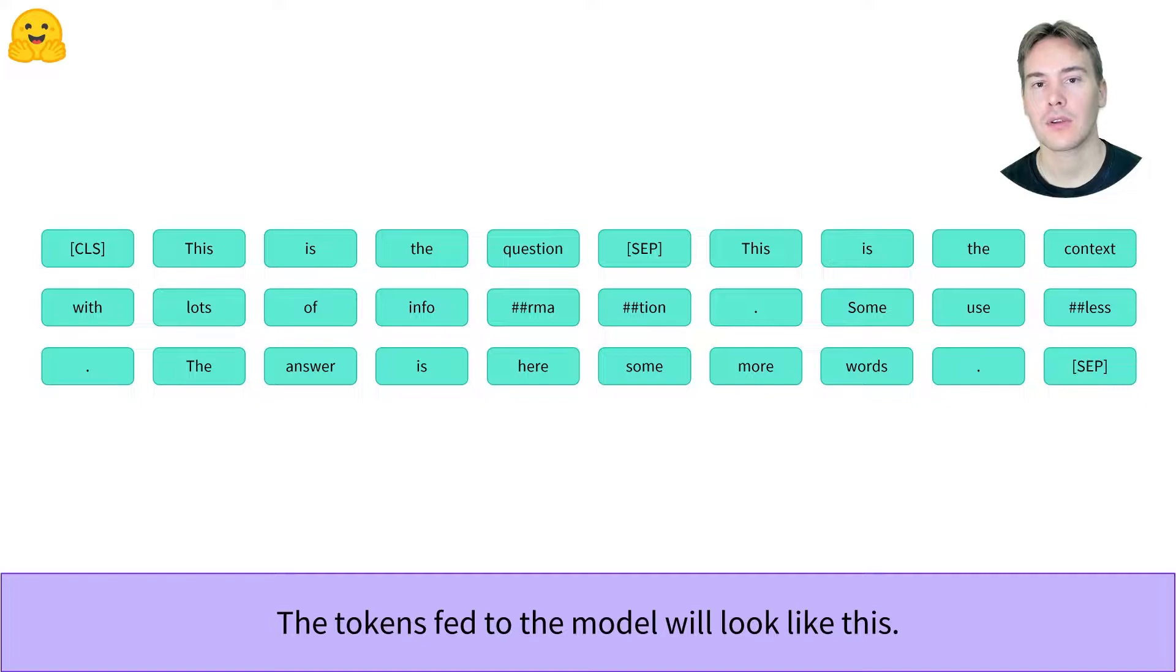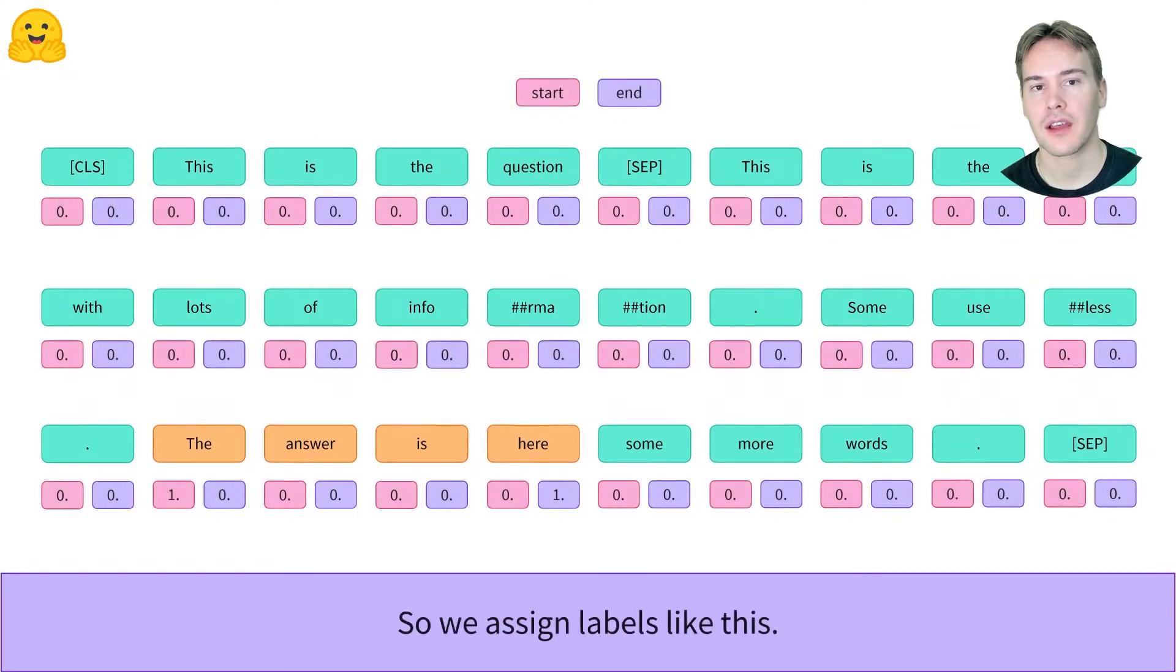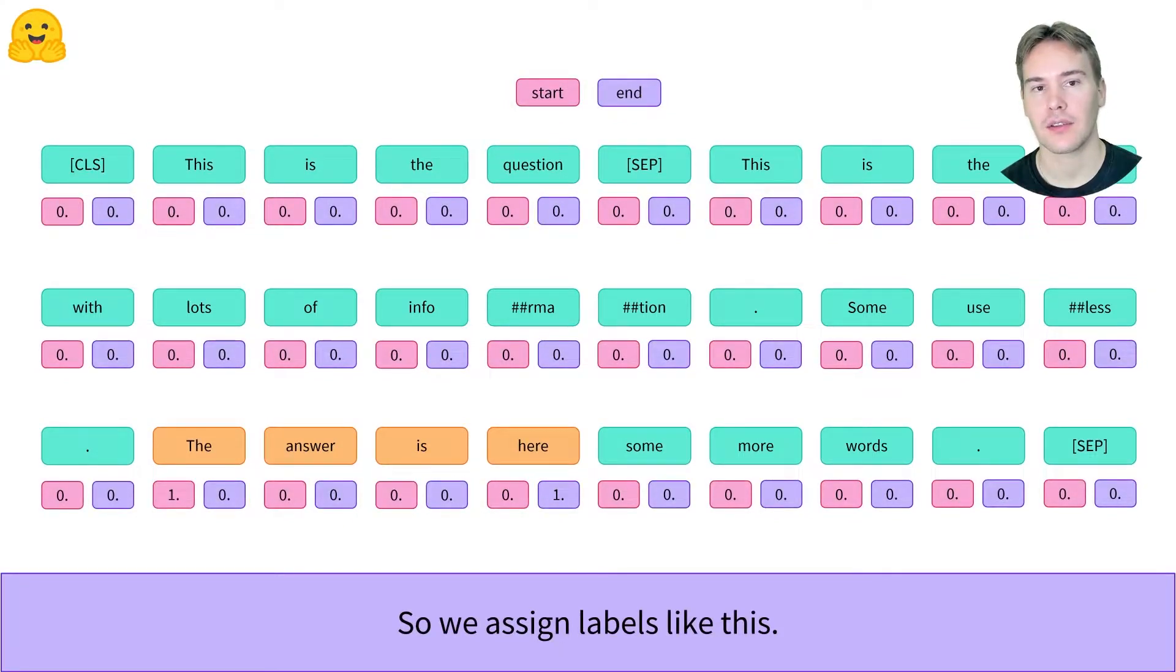First, let's have a look at the model inputs. It's numbers associated with the tokenization of the question followed by the context, with the usual CLS and SEP special tokens. The answer is a part of this token, so we ask the model to predict which token starts the answer and which ends the answer. For our two logit outputs, the theoretical labels are the pink and purple vectors.